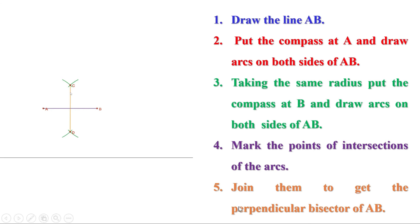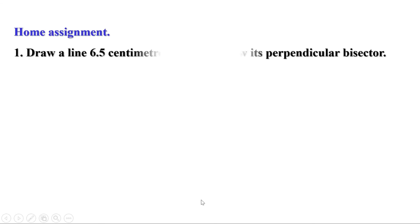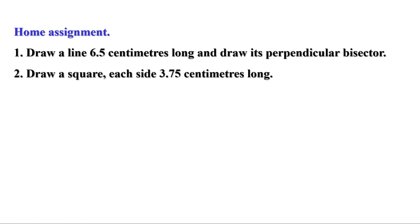Today we have learnt about bisectors and how to draw a perpendicular bisector. Now there are two homeworks. First: draw a line 6.5 cm long and draw its perpendicular bisector. Second: draw a square with each side 3.75 cm long. Send me your suggestions and feedback through the comment box. In the next video, we will see the remaining part. Till then, bye.